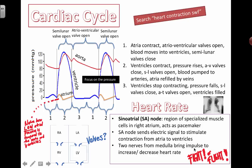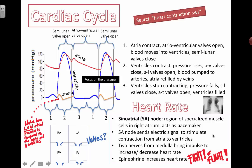Two nerves from the medulla in the brain can bring impulses to increase or decrease the heart rate. Epinephrine, also known as adrenaline, is secreted by the adrenal glands — not the thyroid — and can increase your heart rate. This contributes to the fight-or-flight response, which you'll learn about when studying neurobiology or the nervous system.